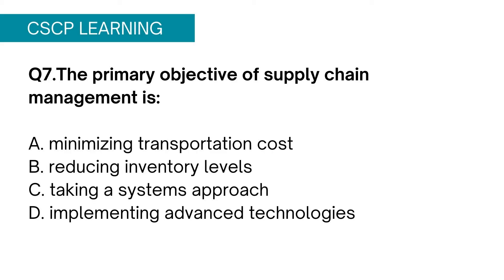Question 7: The primary objective of supply chain management is: Option A, minimizing transportation cost; Option B, reducing inventory levels; Option C, taking a systems approach; Option D, implementing advanced technologies. All of the given options seem correct. Supply chain helps you minimize transportation cost, reduce inventory levels, and implement advanced technologies. But how is it all done? The answer is by taking a systems approach. Therefore Option C is the most appropriate answer.